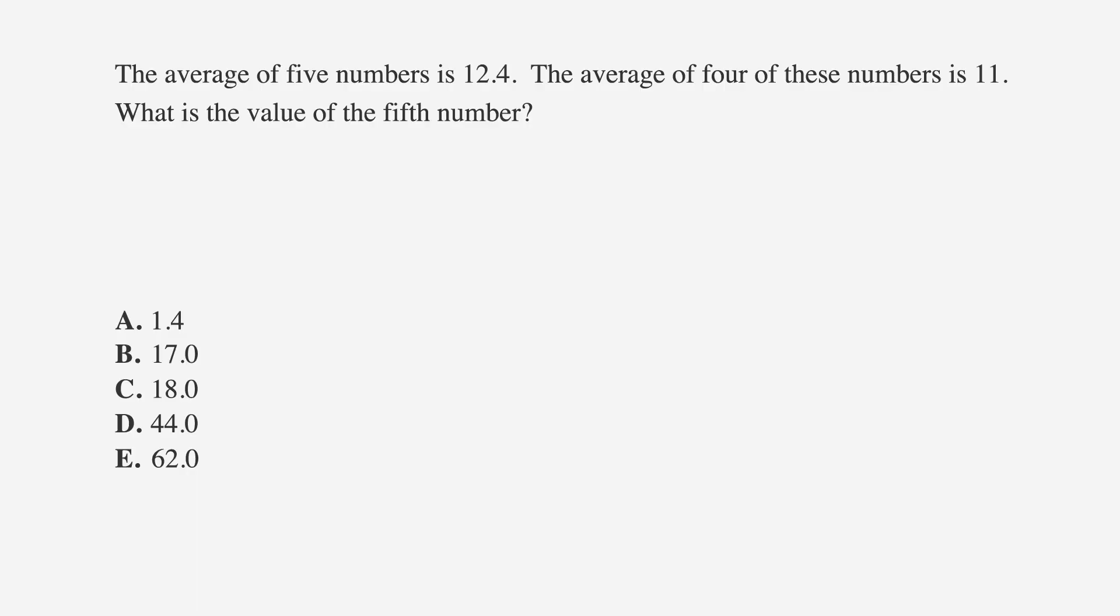Let's take a look at one way averages might show up on the ACT. The average of five numbers is 12.4. The average of four of these numbers is 11. What is the value of the fifth number? Here are your answer choices, which represent the fifth number. As always, we'll underline the facts, circle the keywords, and label the answer choices.